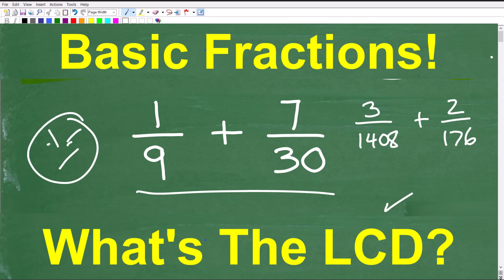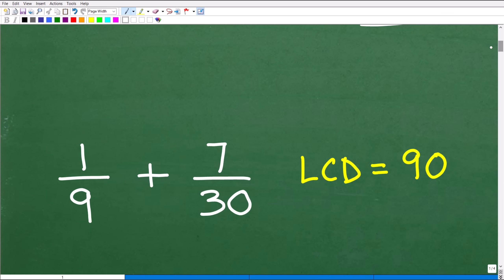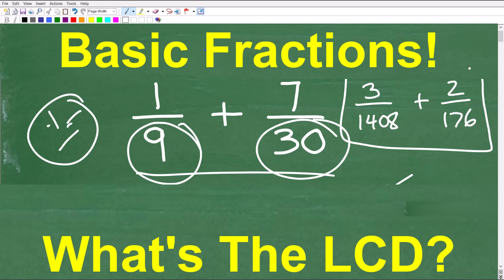So what is the LCD or the lowest common denominator? We're not going to add these fractions. I'm just looking for the LCD. What is the LCD given these denominators? Let's go ahead and take a look at the answer. The answer is 90. The lowest common denominator is 90. But here's the bonus question. What is the LCD? And you kind of give me a series of steps or a recipe or formula. How do you find the LCD? If I gave you some sort of problem like this, could you duplicate your success in finding the LCD?